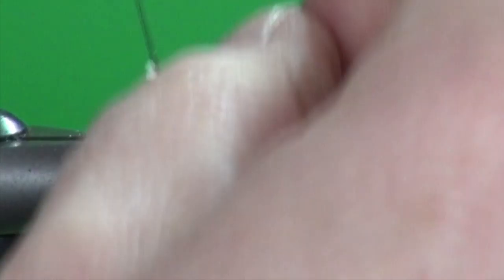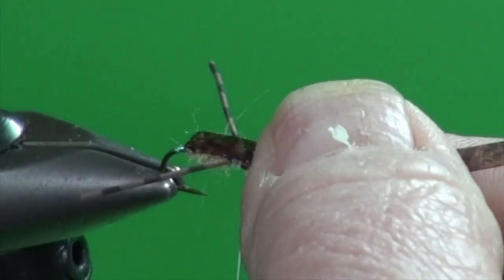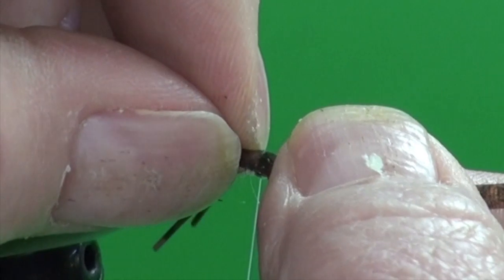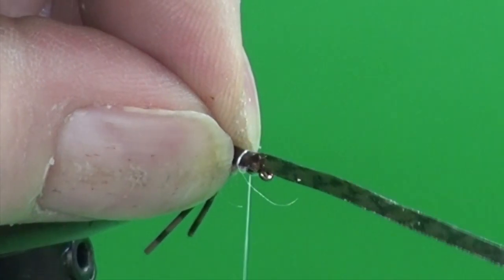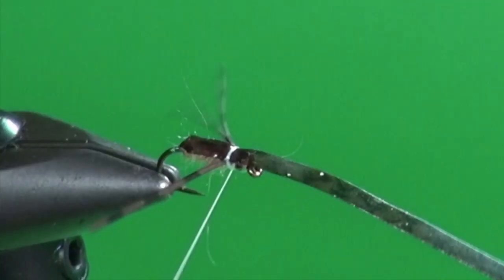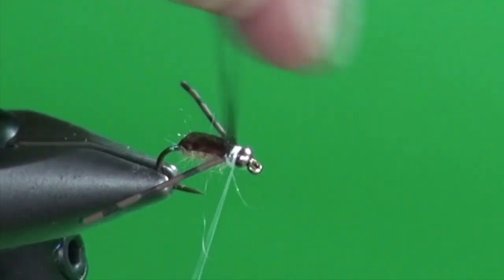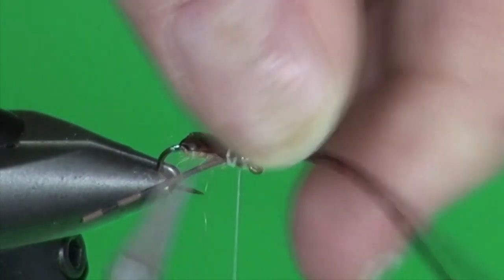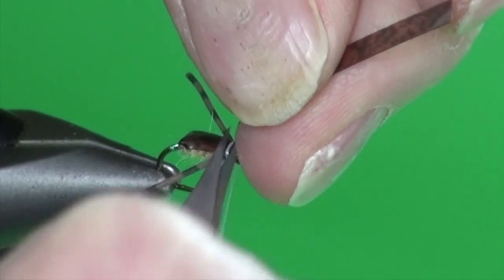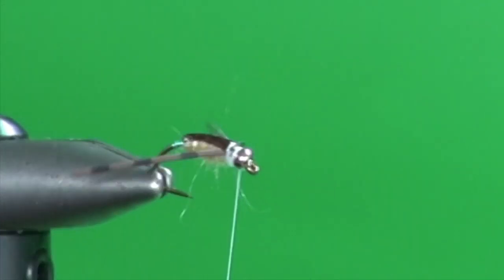Bring the tying thread back up forward and we're going to fold the skinny skin over, a little bit of tension, not too tight, once, twice, a wrap in front, and then just nip the excess away.